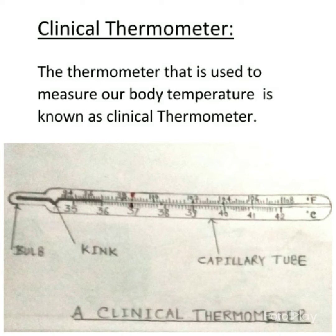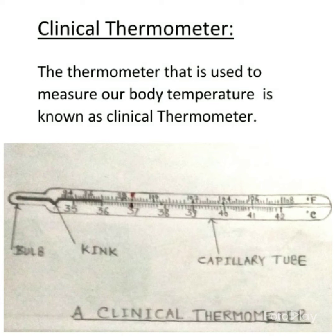This kink plays a very important role. If water falls on any surface, it immediately spreads over a large area. But if a viscous liquid like honey falls, does it spread over a large area? No, because it is viscous. Similarly, mercury is also a viscous liquid. When the bulb is taken out from the patient's mouth, the temperature will go down. Due to this viscous nature and the kink, the mercury level will go down, but continuity will break at the kink and the mercury will not go back into the bulb, allowing us to read the thermometer.